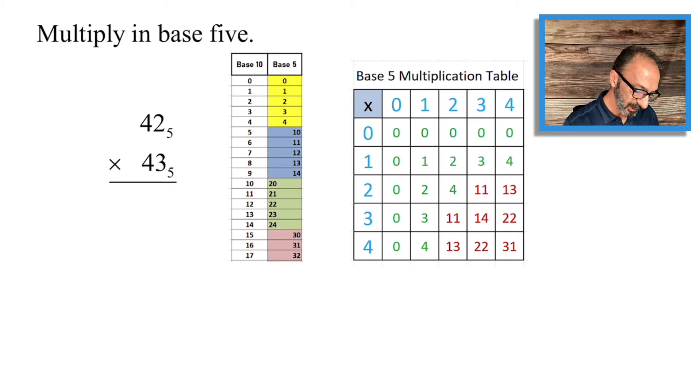Just like in our system, we multiply 3 times 2, but we are in base 5. Of course, 3 times 2 is 6. What is 6? 6 is one five and one unit, so we write 1 and we carry 1. Now we'll move on to 3 times 4.